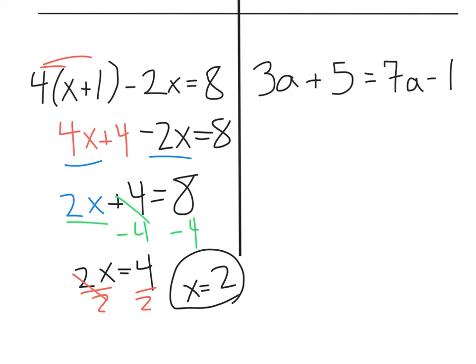Alright, last problem, 3a plus 5 equals 7a minus 1. This one is interesting because it has variables on both sides of the equation. I want to move it to one side. It doesn't matter which way you go, but I'm going to go ahead and minus the 7a from both sides and move the variable to the left. 3a minus 7a is going to be negative 4a. Then, we have plus 5 equals, my 7a's are gone, minus 1.